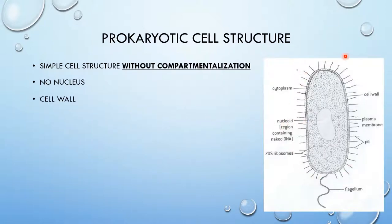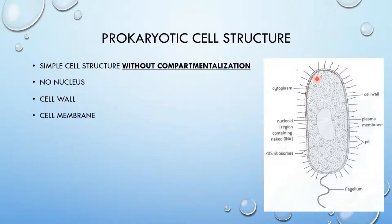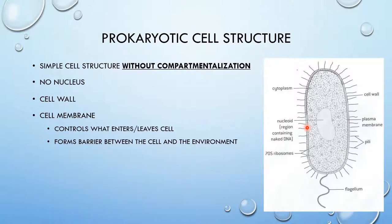It also has a cell wall composed of peptidoglycan. The cell wall is a protective outer layer that maintains shape and prevents excessive water uptake. It also has a cell membrane stuck inside the cell wall which controls what enters and leaves the cell. It also forms a barrier between the cell and the outside environment.